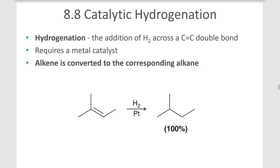In this section we'll discuss catalytic hydrogenation. Hydrogenation is the addition of hydrogen and hydrogen across a double bond. This reaction requires a metal catalyst and doesn't go without the catalyst, where an alkene is converted to the corresponding alkane.